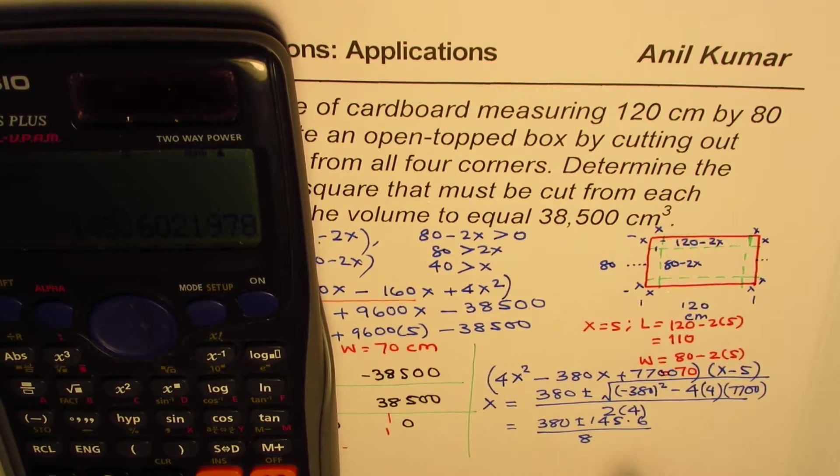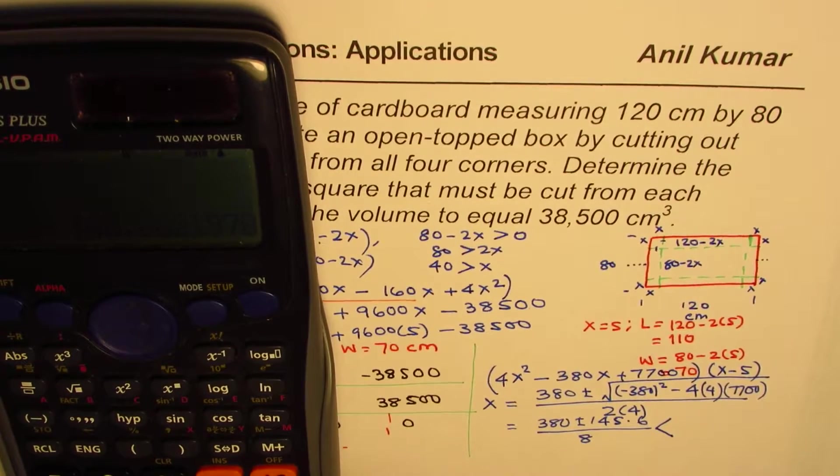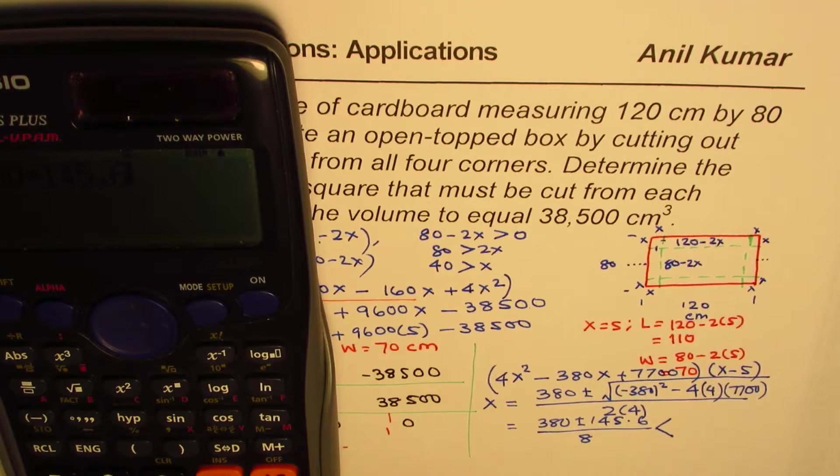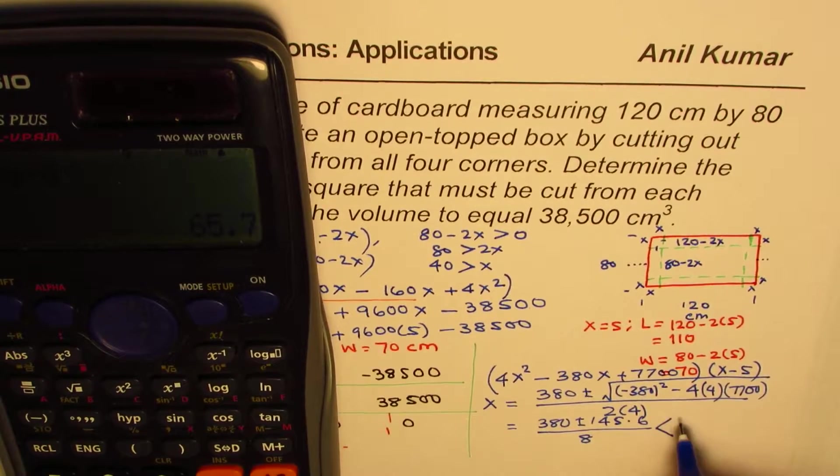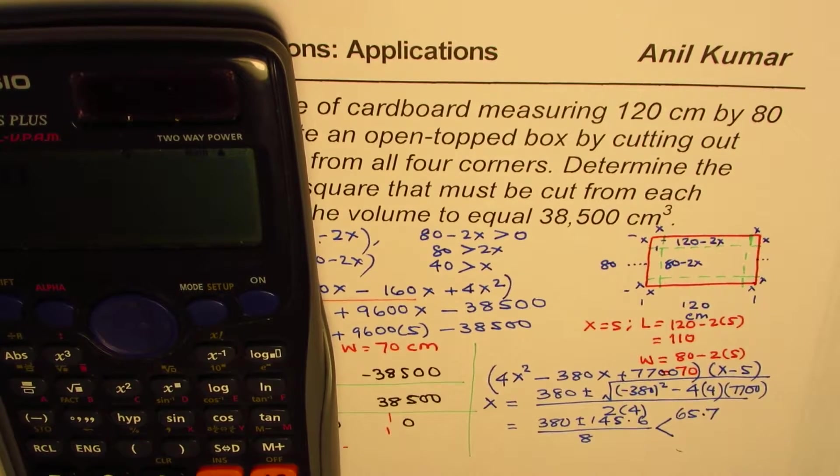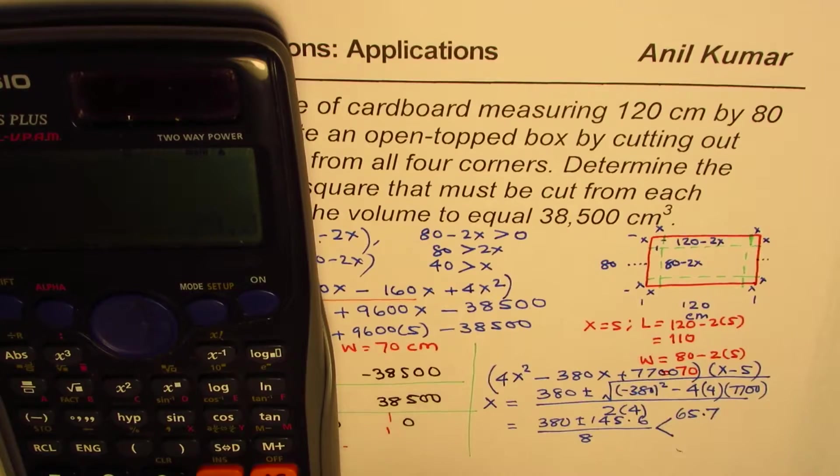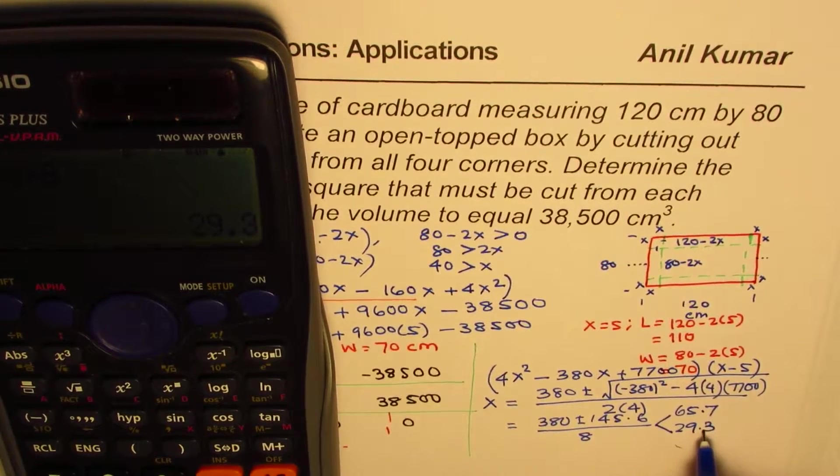Clearly, both are valid values. So we can try those values. It gives us 380 plus 145.6 equals to, divided by 8, equals to, in decimals, 65.7. The other one is 380 minus 145.6, divided by 8, equals to, in decimals, 29.3.